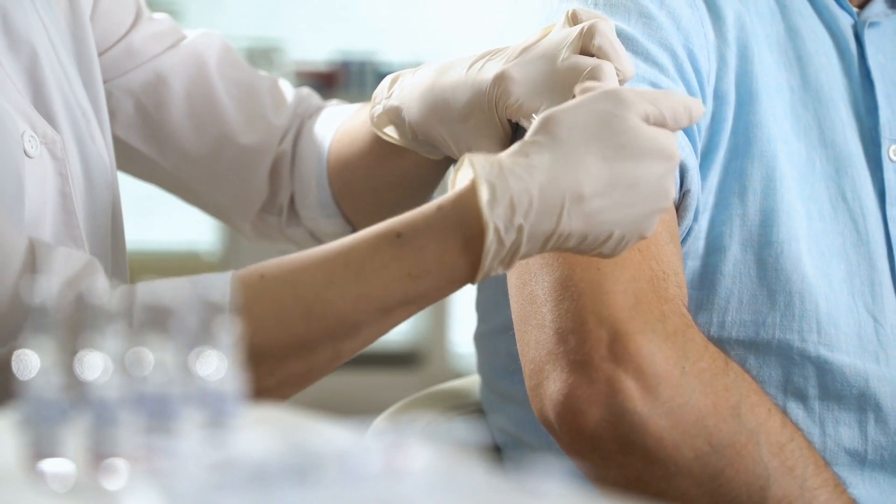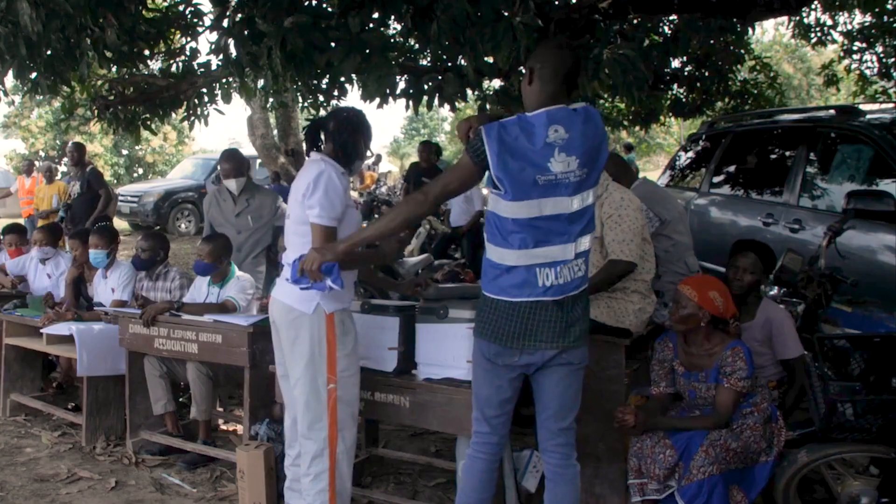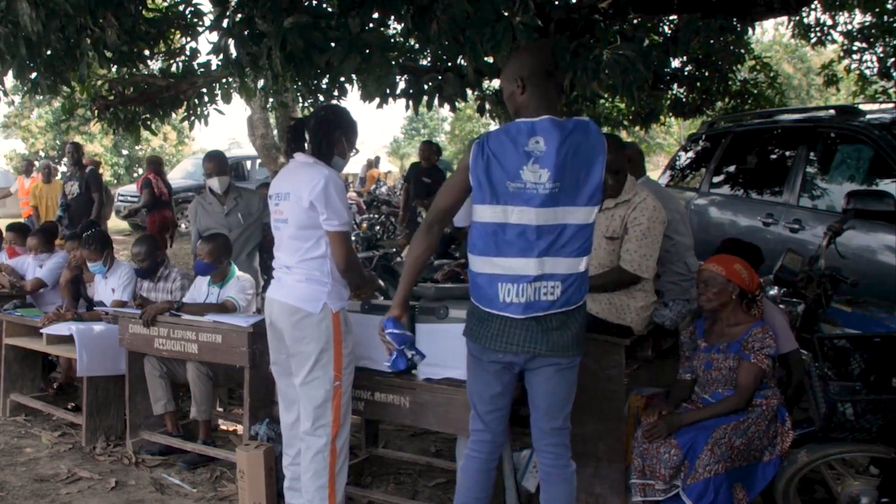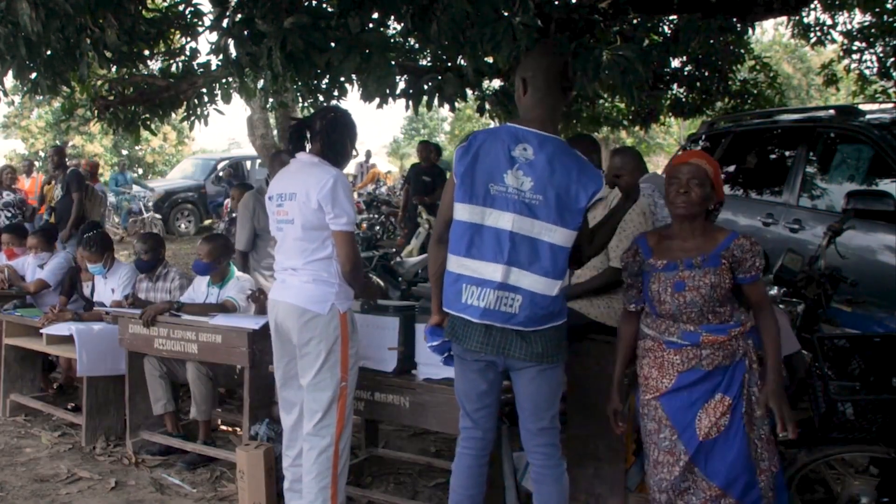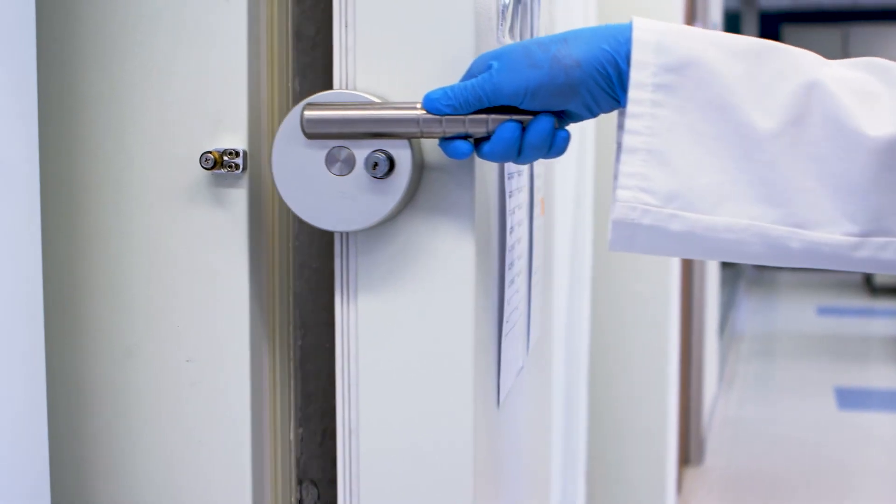So how do these vaccines get safely delivered around the world, even to rural areas in hot climates, all while remaining in peak condition? The answer lies in the cold chain.